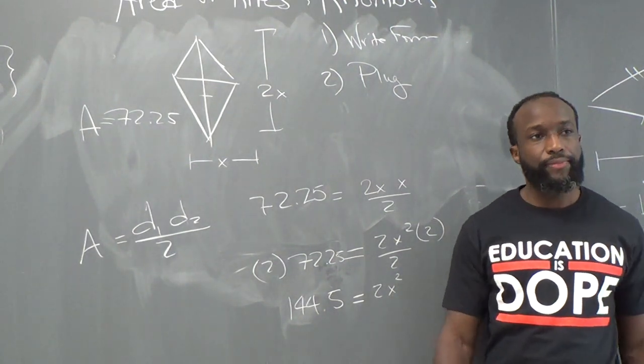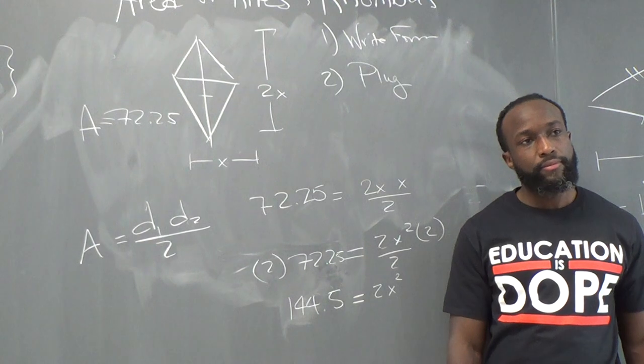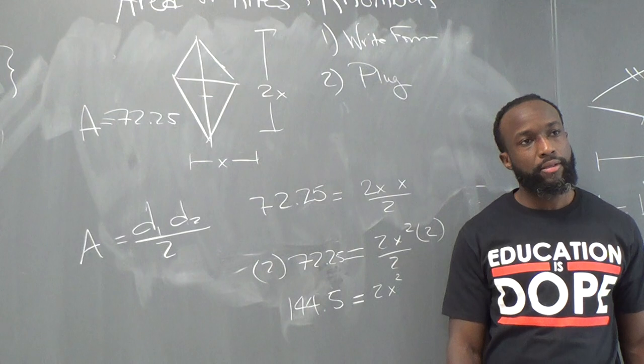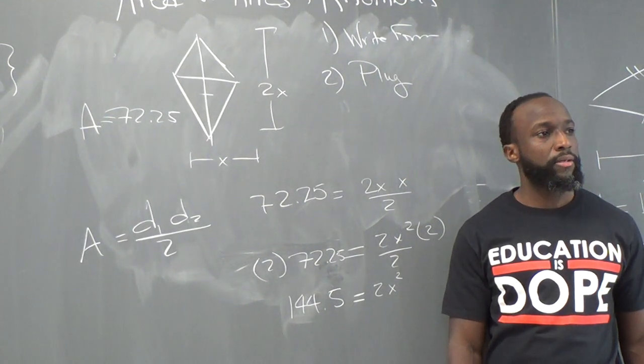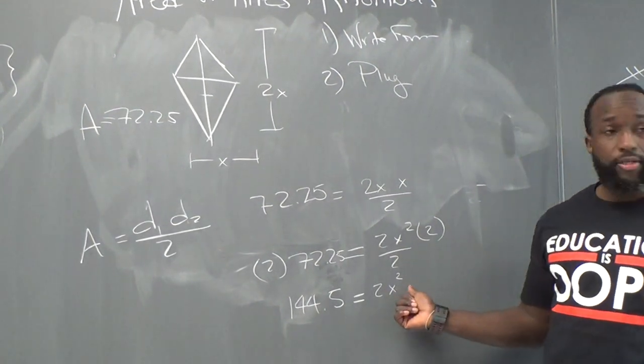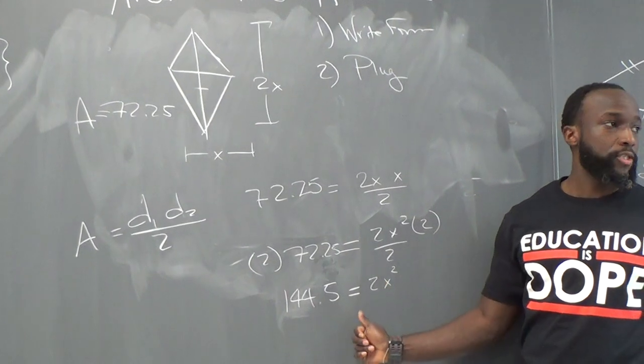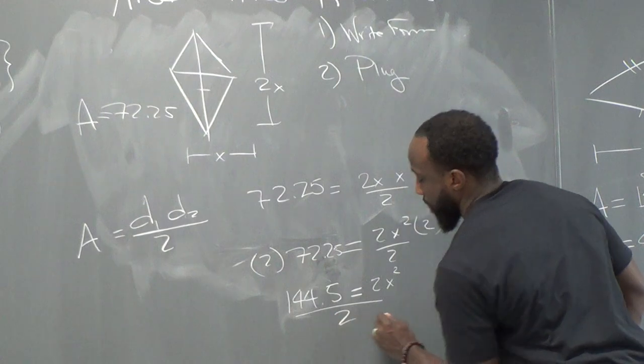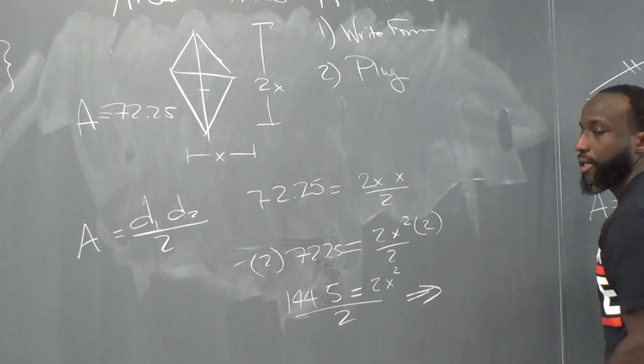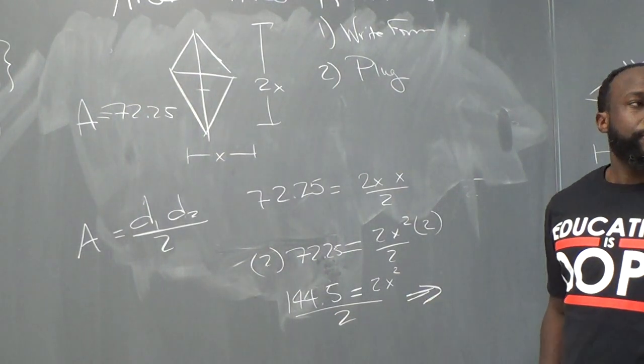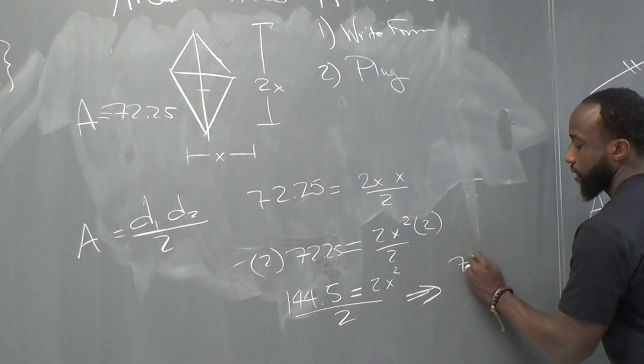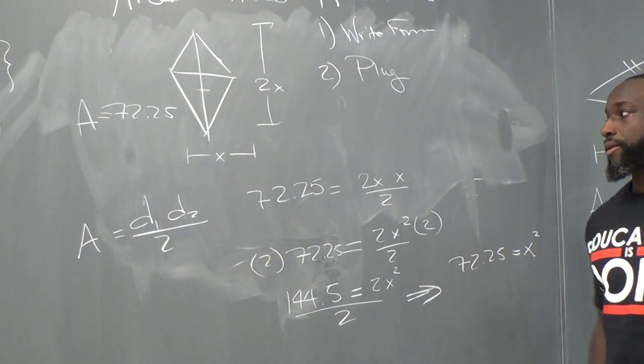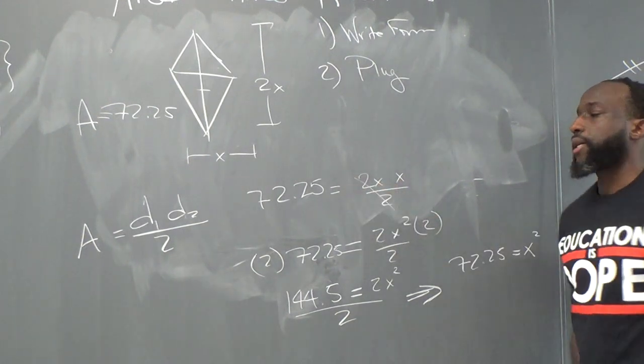Then what do we do, Ty? Factor. Factor. By doing what? I forgot what it is. You got a square root, man. Do you want to square root first? Yeah. What about this 2? Let's take care of this 2 first. Divide by 2. Yeah, yeah. Divide by 2. Alright? When you divide by 2, what do you get? 72.25. 72.25. Then we got to take the square root of it. Oh yeah, because technically we just did that.